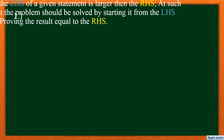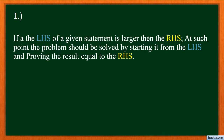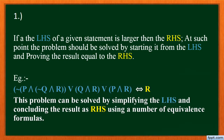The first rule is: if the left-hand side of a given statement is larger than the right-hand side, then the problem should be solved by starting from the left-hand side and proving the result equal to the right-hand side. Because the right-hand side is easy to keep short, but on the right-hand side you cannot expand a particular variable into a large equation. For example, in this equation — negation of P and negation of Q and R, or Q and R, or P and R — is equal to R. This problem should be solved by simplifying the left-hand side and concluding the result at the right-hand side using a number of equivalence formulas.